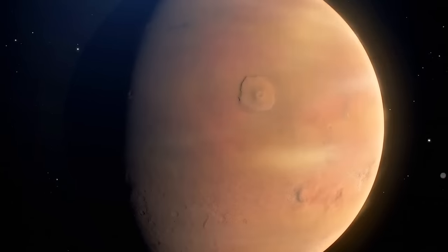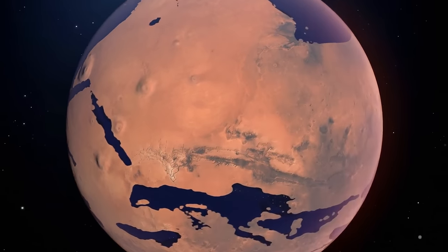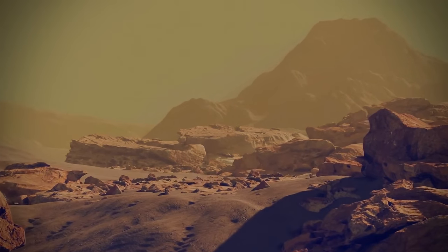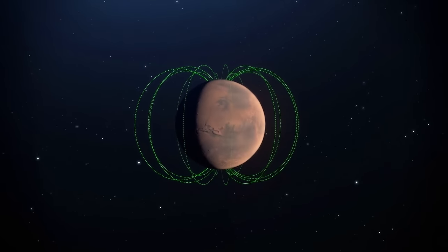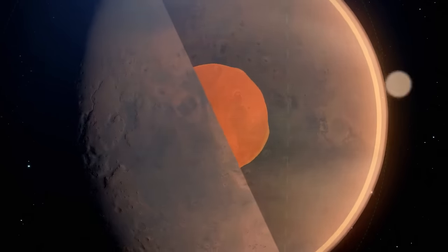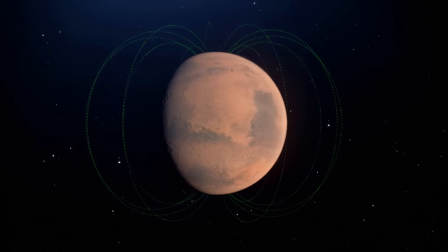But Mars used to be much wetter and warmer than it is today. That means its atmosphere was much thicker. A long time ago, it created a strong greenhouse effect and trapped the sunlight. Mars used to have a pretty strong magnetic field. Just like on Earth, the magnetic field on Mars was created by currents of molten metals in its core. But unlike our planet, the inside of Mars cooled enough to switch off the magnetic field.